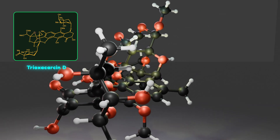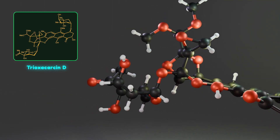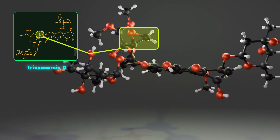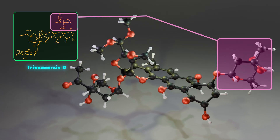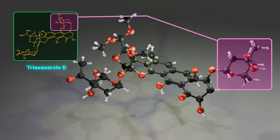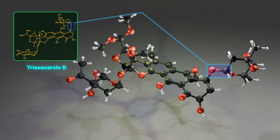Interestingly, a spiroepoxide moiety is attached to the ring and is essential for the bioactivity of this compound. There are also two modified hexose sugars — one is directly attached to the anthraquinone core, and another is attached to the six-membered ring in both conformations. Notice that both glycosidic bonds are in the axial position of the carbohydrates.